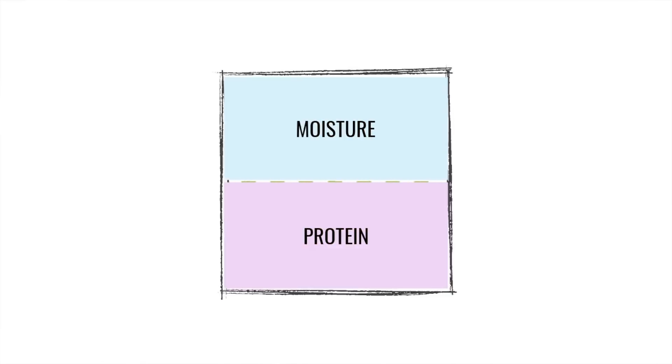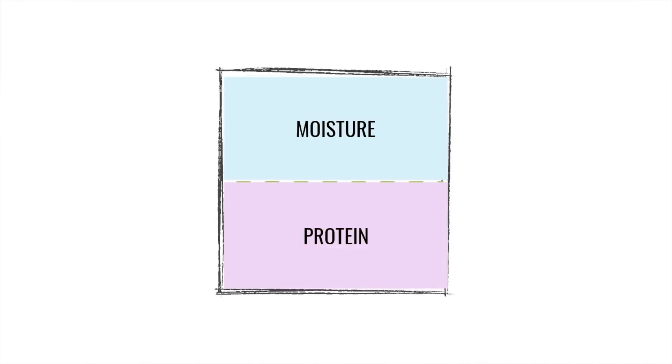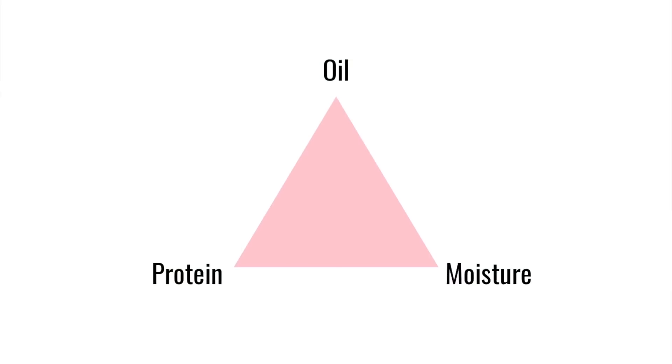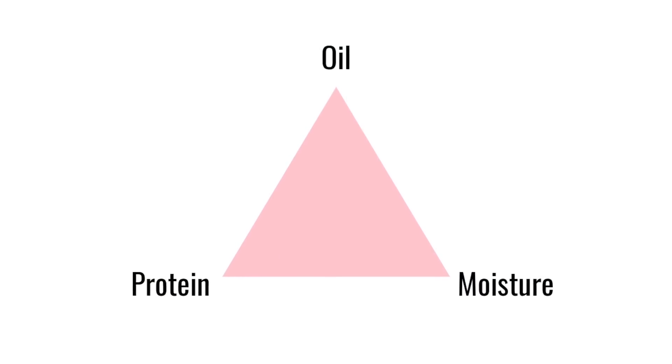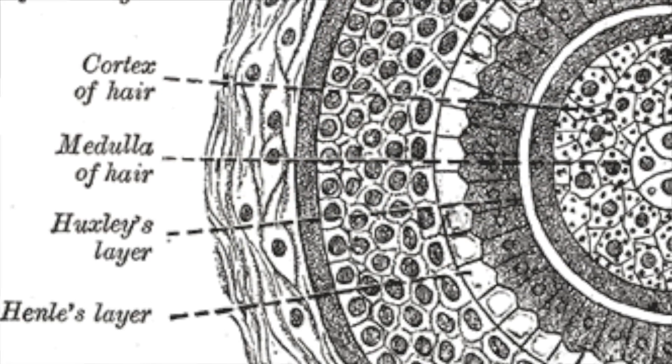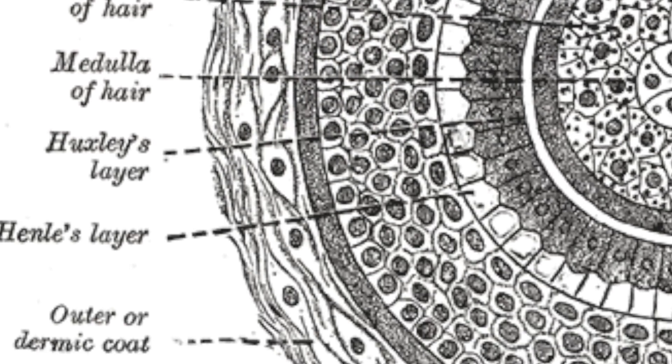Now in the natural hair care community, we talk about moisture-protein balance, but really it's a triangle — it is moisture, protein, and oil balance. That's really what we're dealing with here. If you've been part of my channel, you already know that our hair is lipophilic — it is oil loving and it is made up of oil.